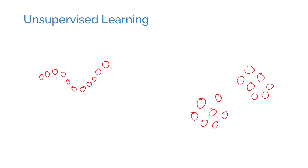Unsupervised learning, on the other hand, aims to find some structure in the data without having labels. One reason unsupervised learning might be useful is that unlabeled data is abundant and cheap, since finding a ground truth label for each sample is usually the step that takes a lot of time.